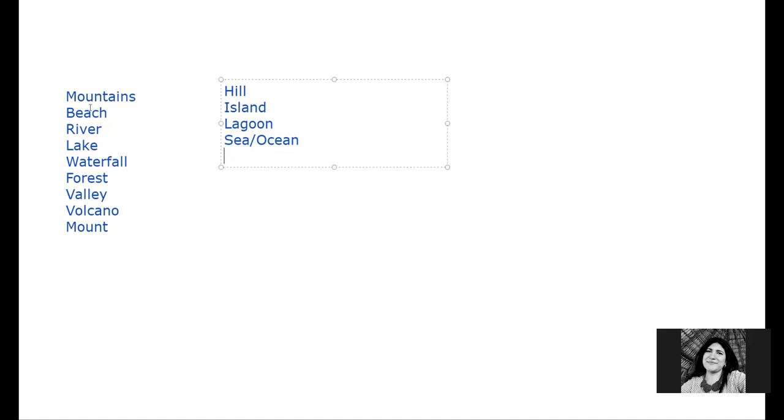So we have mountains, beach, river, lake, waterfall, forest, valleys, volcanoes, mountains, hills, islands, lagoons, and sea or the ocean. Desert. Desert, excellent. Remember guys, let's not confuse desert with dessert. This is dessert, the sweet dish. And this is desert, the geographical feature. Pyramids, that's correct. The pyramids are in the desert, for example in Egypt. We also have glaciers and icebergs. Excellent, perfect.